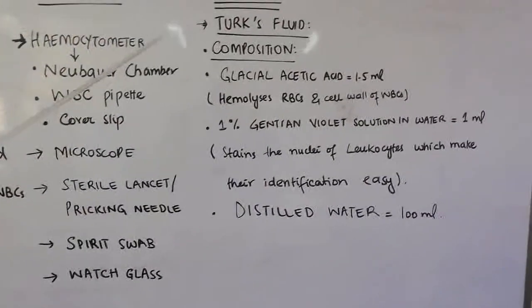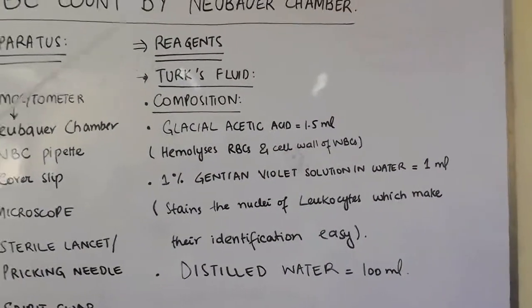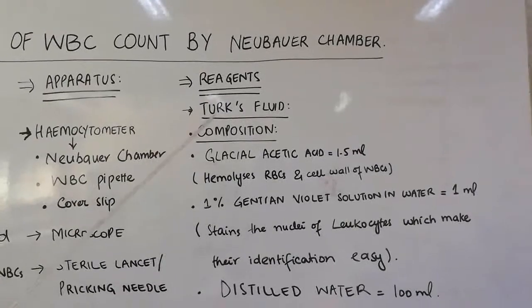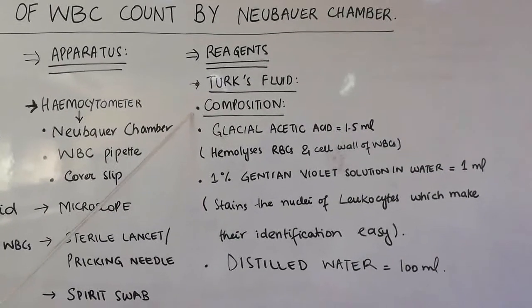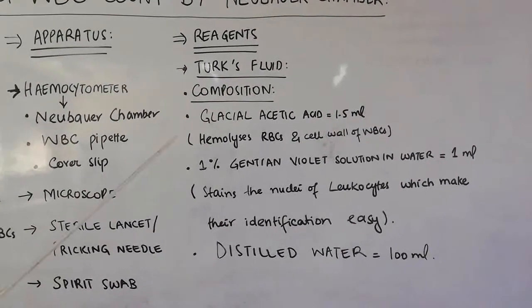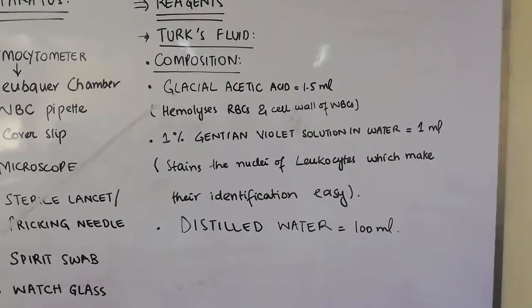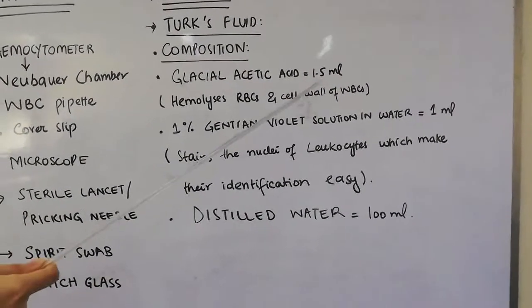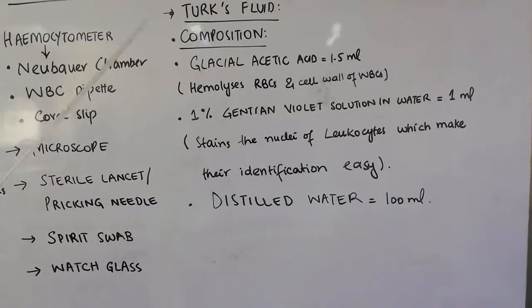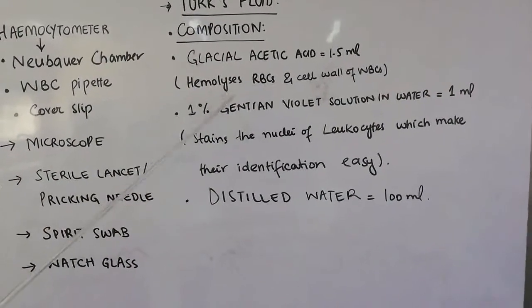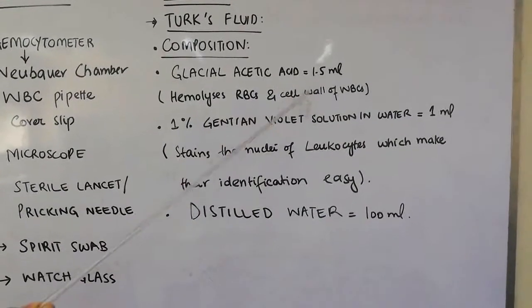The reagent used in WBC count is Turk's fluid. The composition of Turk's fluid includes glacial acetic acid, which is 1.5 ml in the Turk's fluid. The function of glacial acetic acid is that it hemolyzes the RBCs and the cell wall of WBCs.